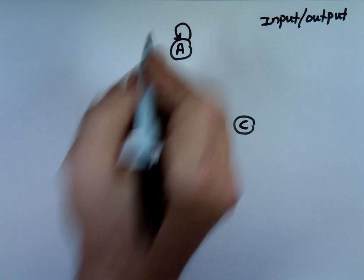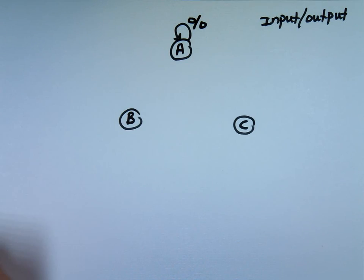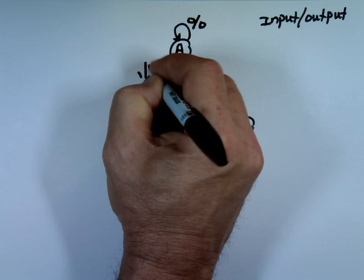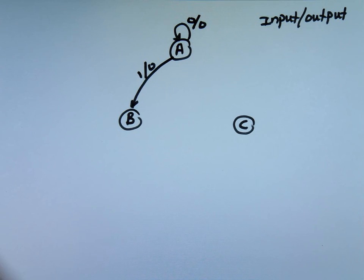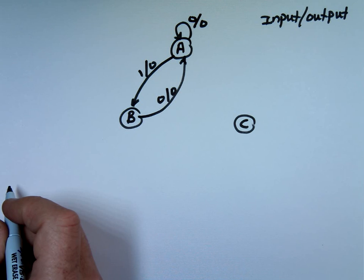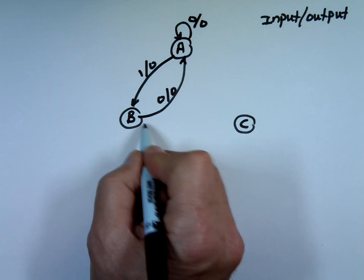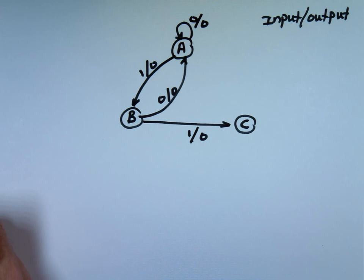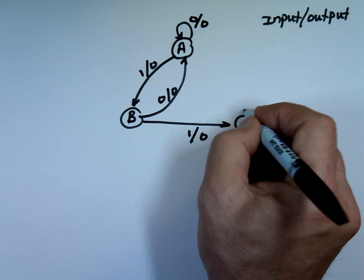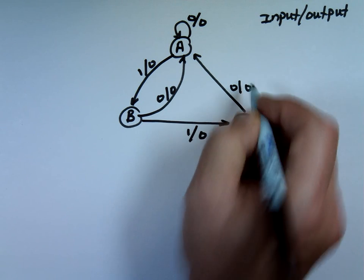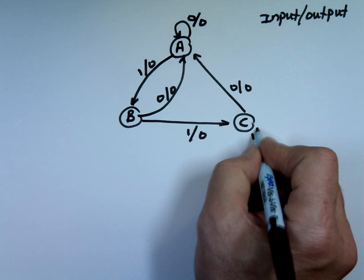So if I'm state A, if my input is 0, my output is 0. If my input is 1, I go to B. My output is 0. If I'm at B and I put a 0, I go back here. My output is 0. If I'm at B, you put a 1, your output is 0. If I'm at C, and if you put a 0, you get a 0. And if you put a 1, you get a 1. And you stay here.